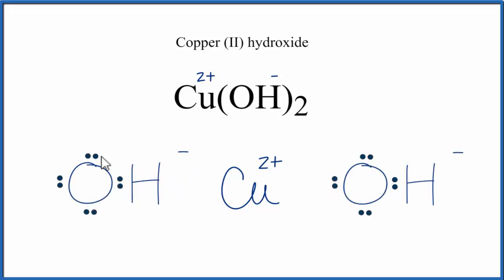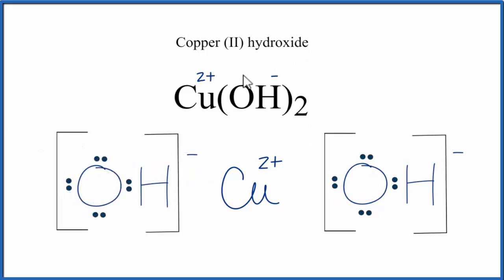We'll then put brackets around the hydroxide ion, and that's the Lewis structure for Copper II hydroxide, Cu(OH)2. Because we have this positive here, it's attracted to the negatives, and that's what holds together this ionic bond.